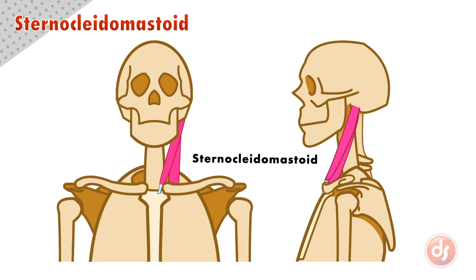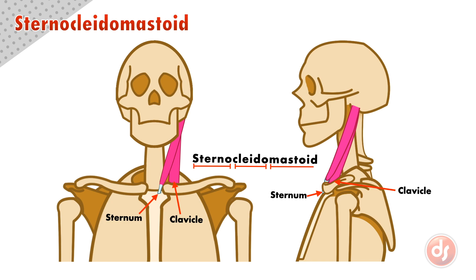The name sternocleidomastoid can look intimidating, but it's really simple if we break it down. Sterno references the sternum, where the first head originates. Kleido references the clavicle, where the second head originates. Mastoid refers to the mastoid process, where both parts of the muscle insert.